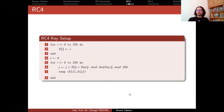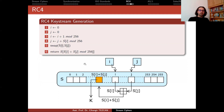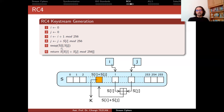Once the key setup process is finalized, it is time to produce the key stream. We re-initialize i and j to zero. Then i is updated as i plus 1 mod 256 — so it is simply incremented by one. j is updated as j plus S[i] mod 256, so S[i] values determine the current value of j. You can think of i and j as pointers into this array. Once you obtain the values of i and j, you look at S[i] and S[j] and swap them.